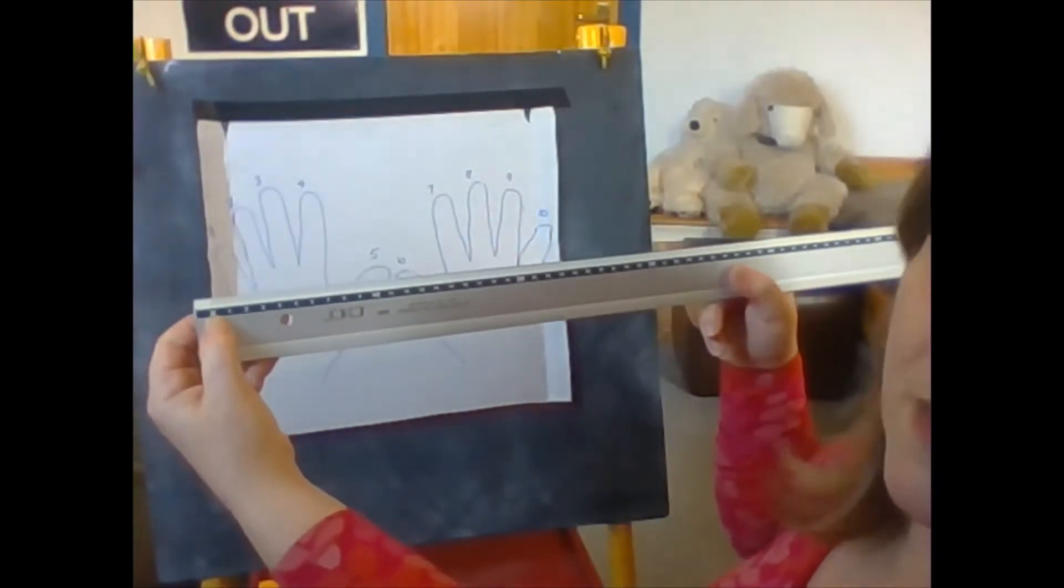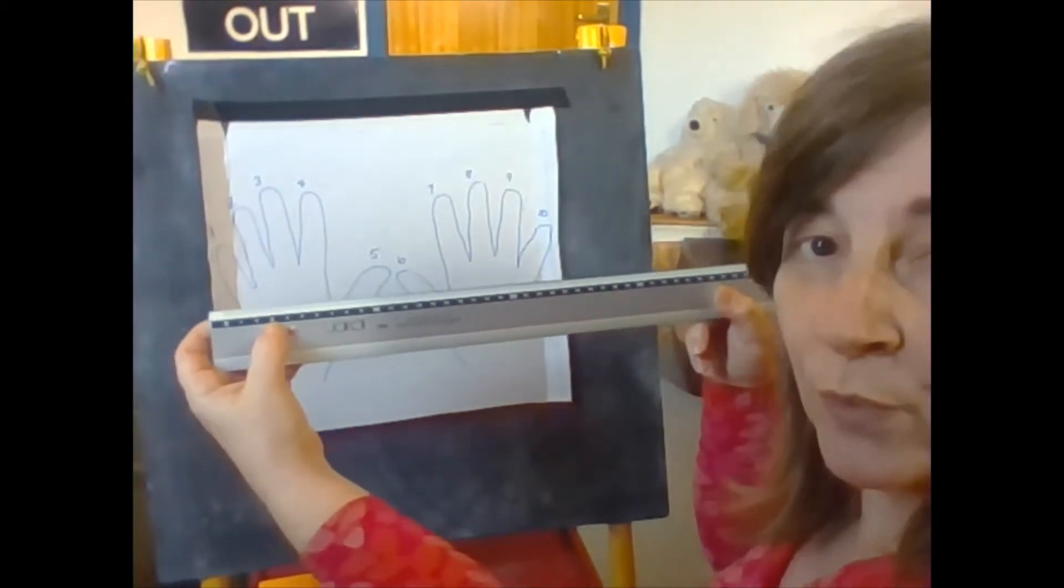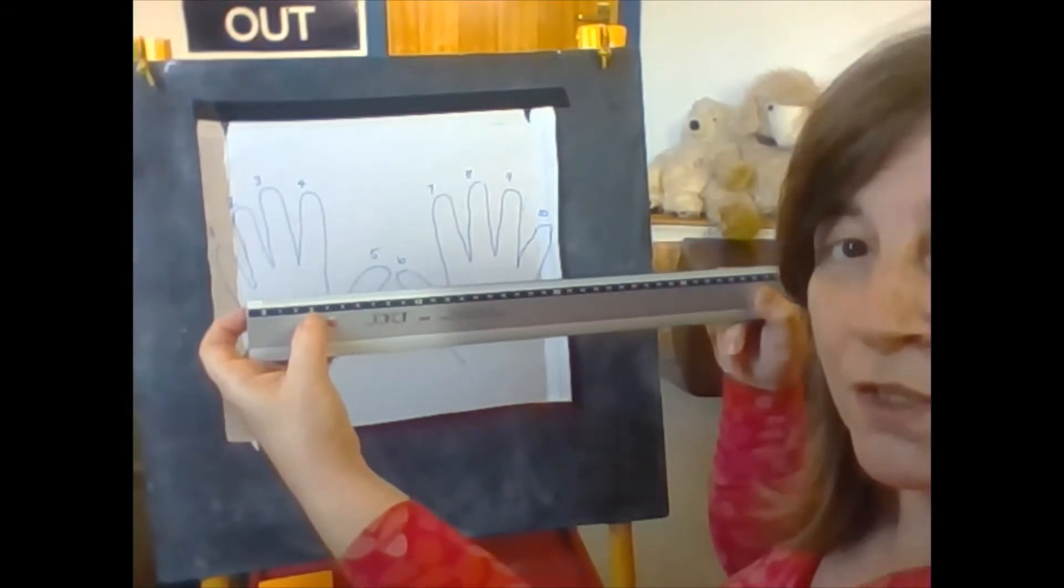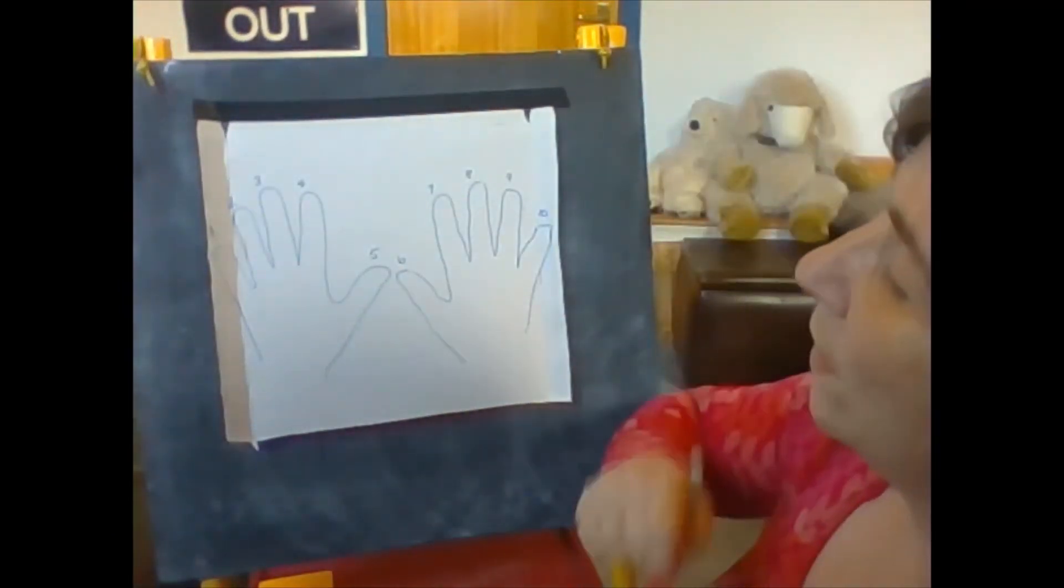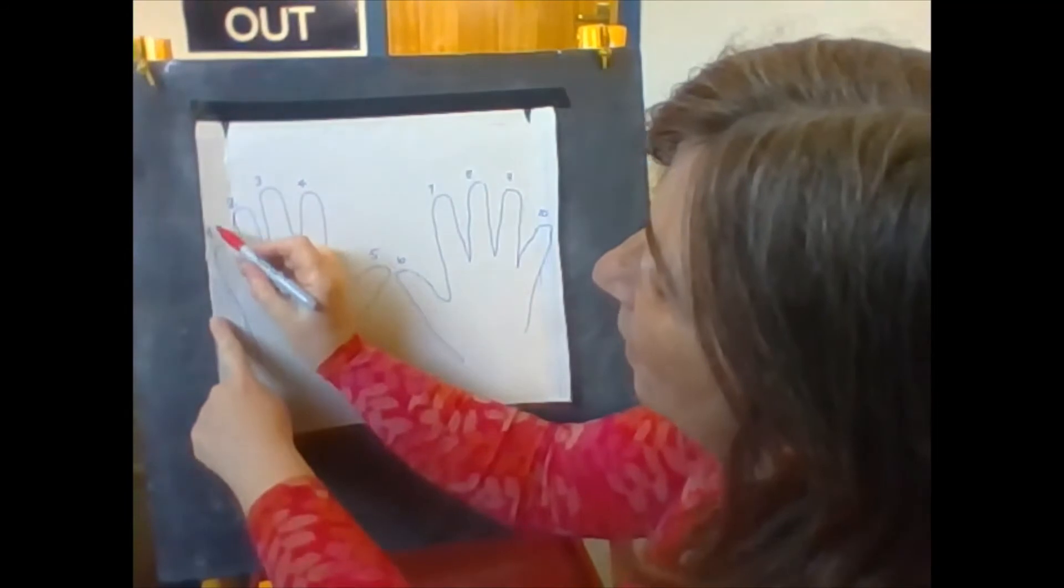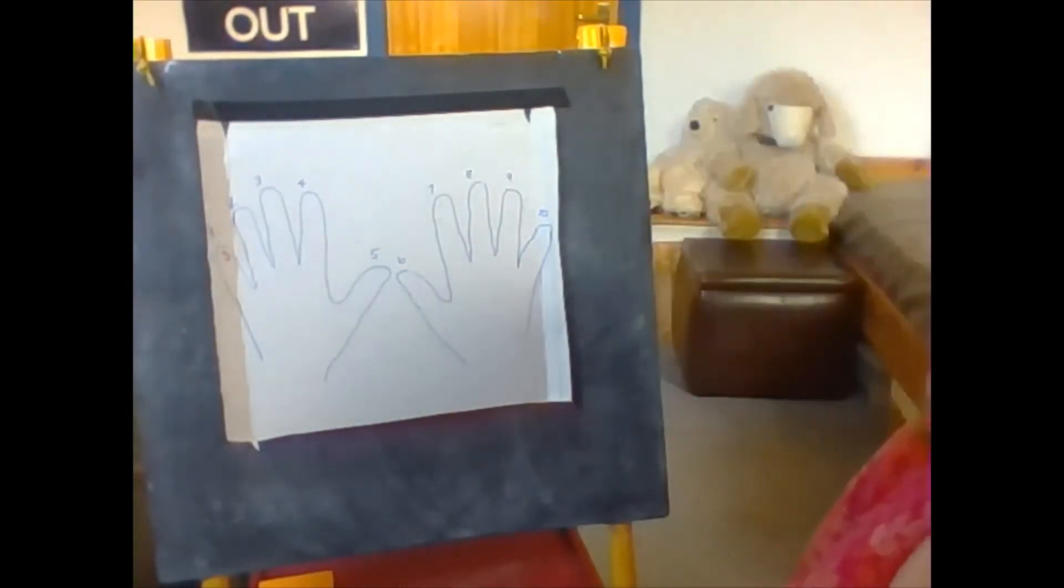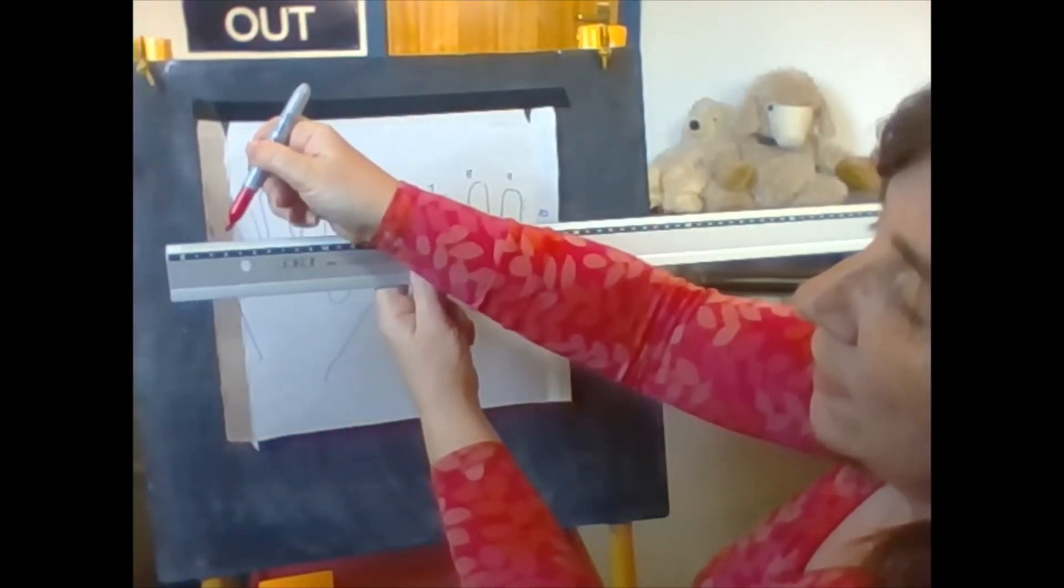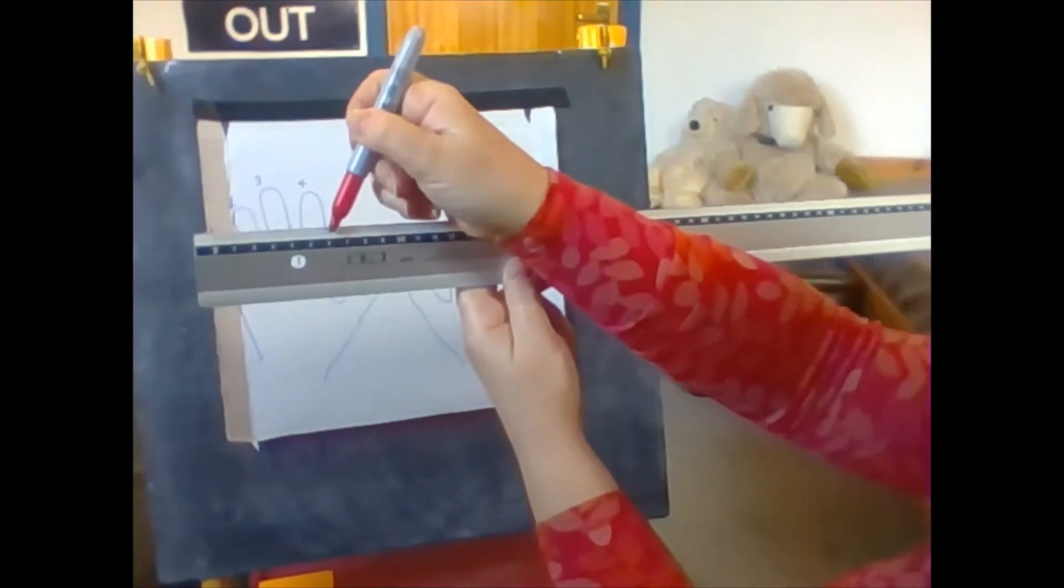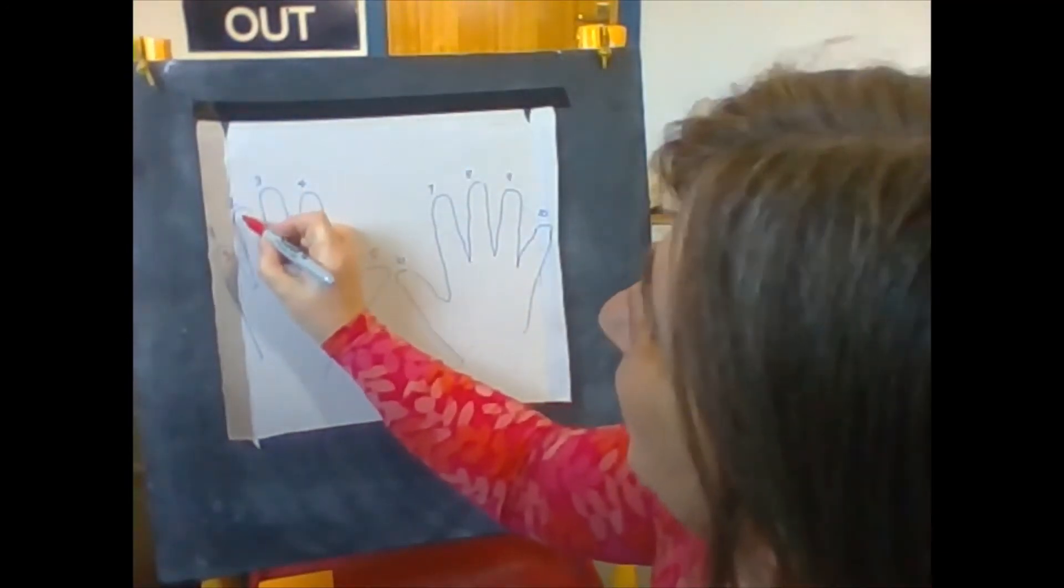If we start at zero and do one skip along one, two, three, it brings us to the number three. So if we do one times three it gives us three and we can write that number in on our one digit here, our pinky. One times three is three. If we do two skips along starting at zero and we do one, two skips along, we're now on, can you see it, number six. So we can put a six here.